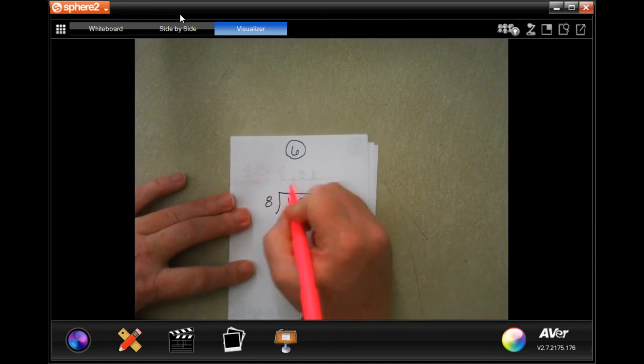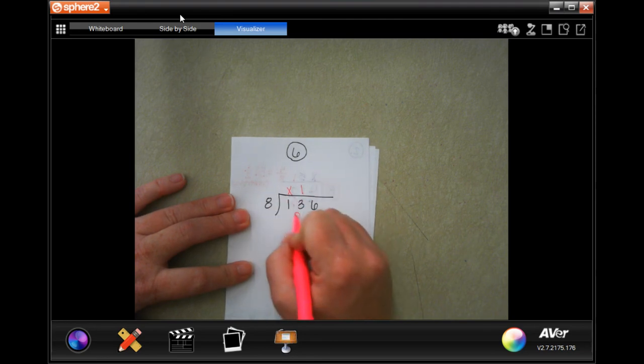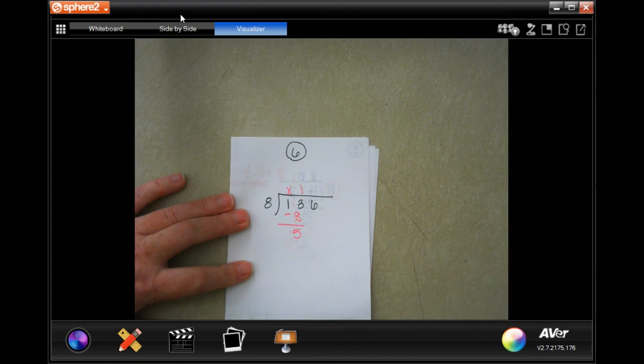So, 8 is not going to go into 1. 8 will go into 13 one time. 1 times 8 is 8. 13 minus 8 is 5. 5 is smaller than 8, so I can bring down my 6.